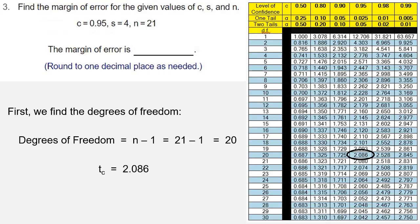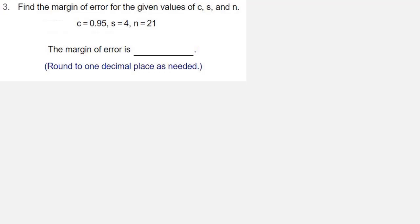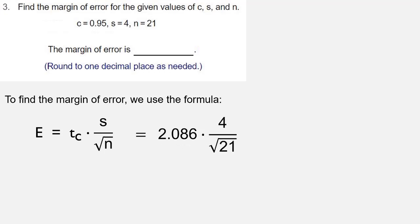Once we know the critical value, we can use the margin of error formula. The margin of error formula is given by E equals Tc times S over the square root of N. So that's 2.086, the value we found from our table, times 4 over the square root of 21, which is 1.820810076.